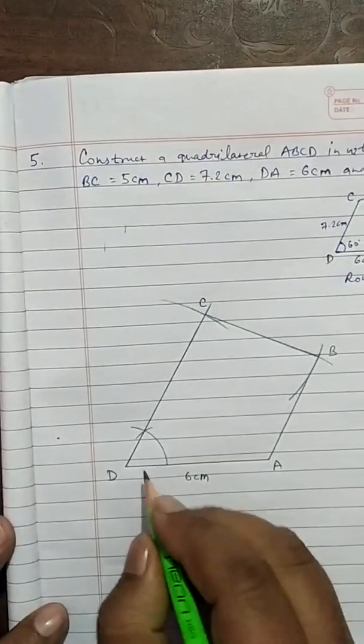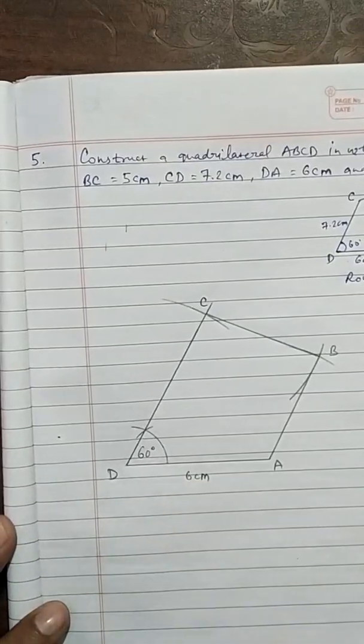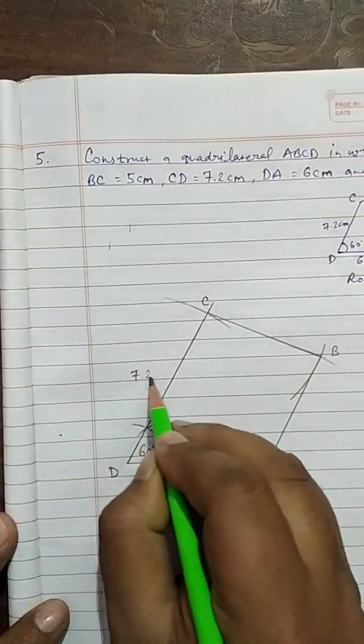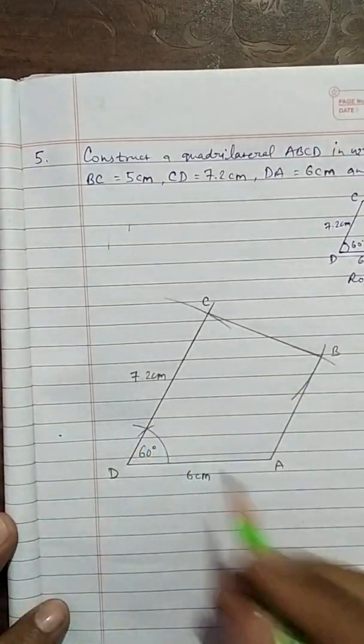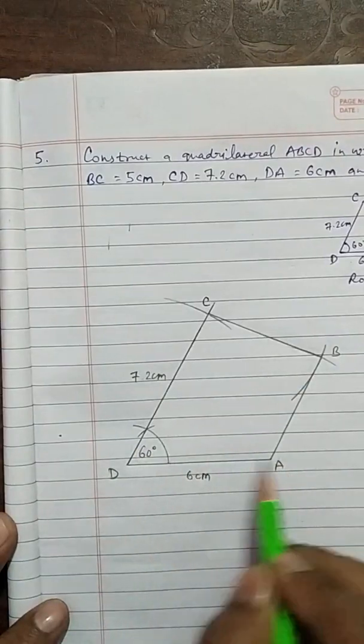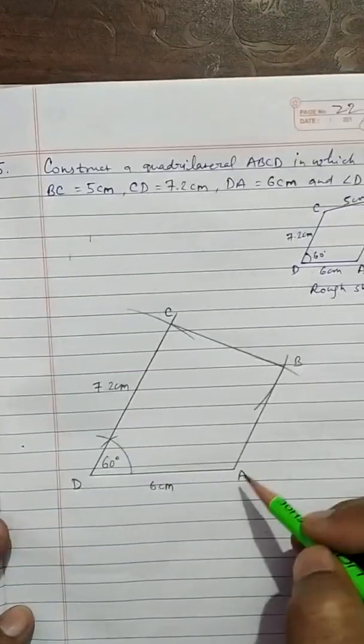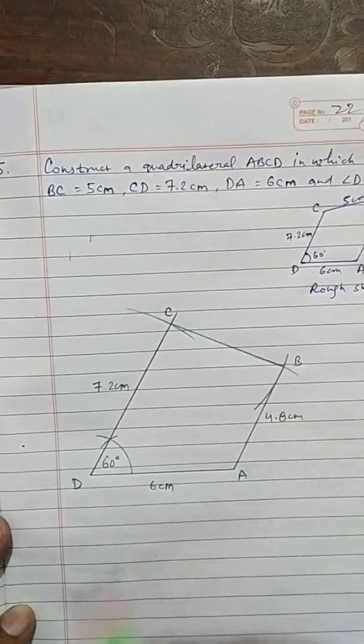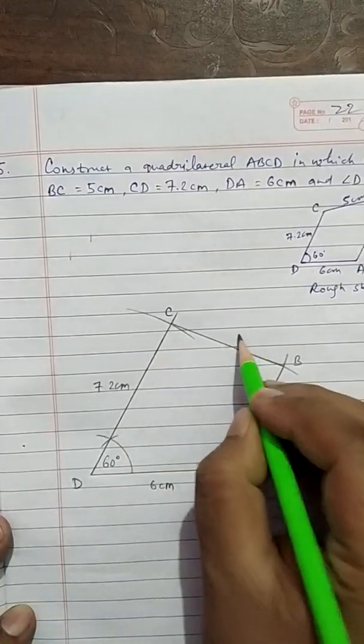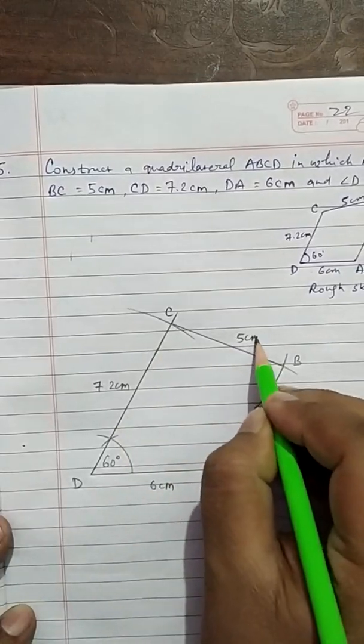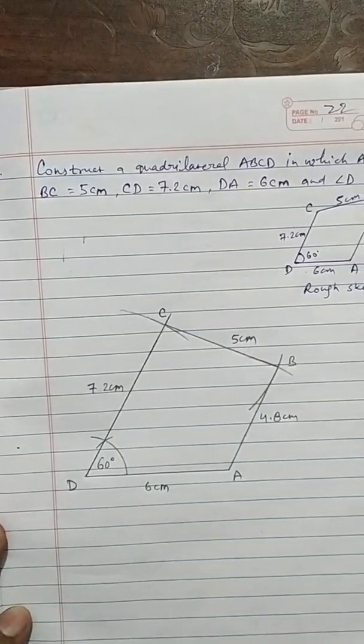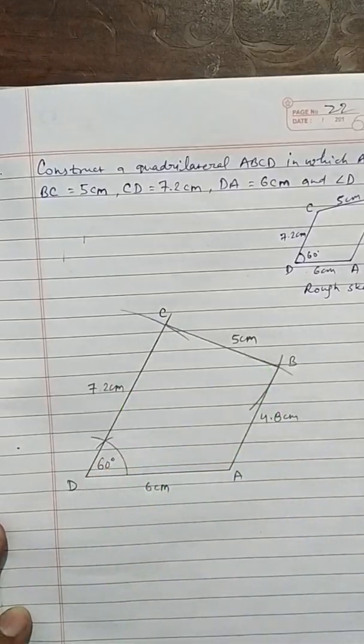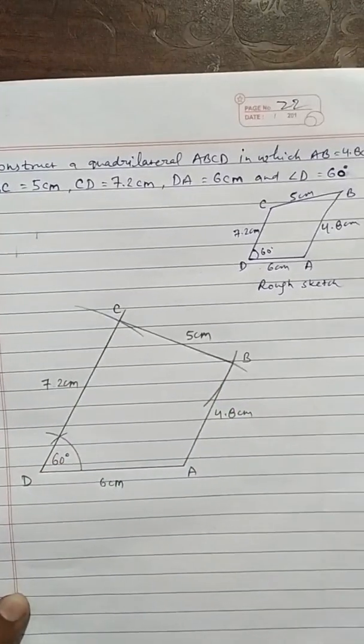Write here, 60 degree. DC was 7.2cm. Write here, 7.2cm. And AD was 6. AB is 4.8cm. And BC is 5cm. This is the required quadrilateral S, S, S, S, A angle. And you have to write the steps of construction also.